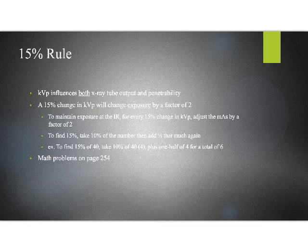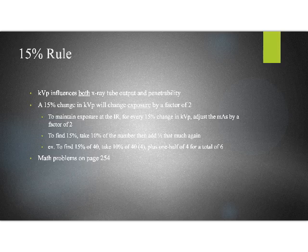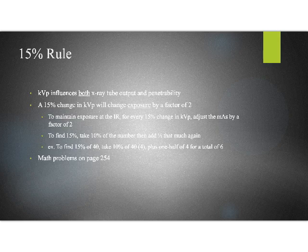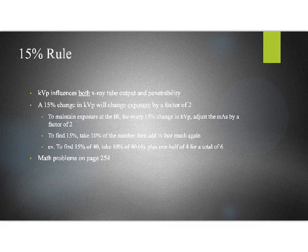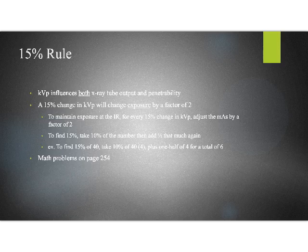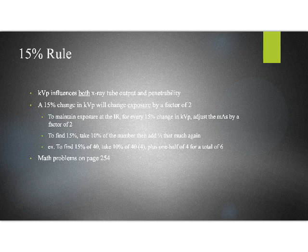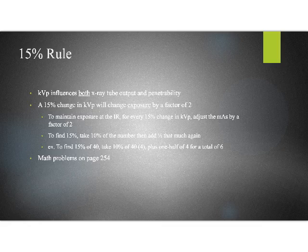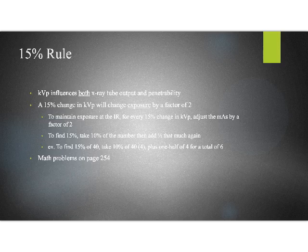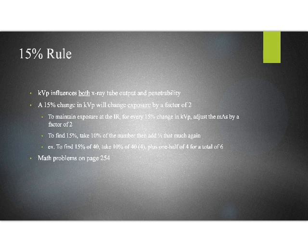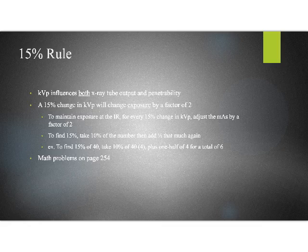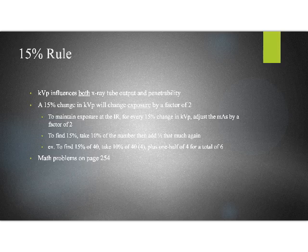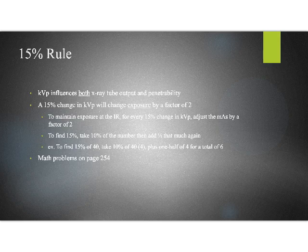The way that we talk about that is the 15 percent rule. He gives it in the oldest form right here, which is to maintain exposure at the IR, for every 15 percent change in KVP, adjust the mass by a factor of two. I think that's the most concise way to express it. So if you want a quick way in your brain to find 15 percent, take 10 percent of the number. So 10 percent of 40 is 4. Divide 4 in half, that gives me 2. Add those together, it gives me 6. That gives me 6 is 15 percent of 40. That's just one example of maybe a quick and dirty way to do it. We will do some math problems though now so that we're all clear on this.